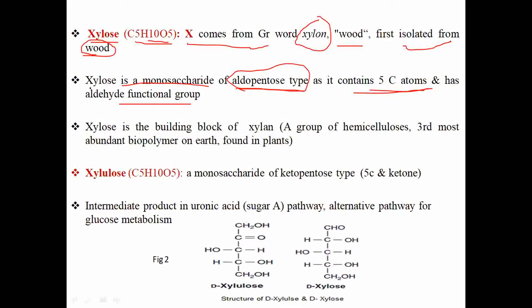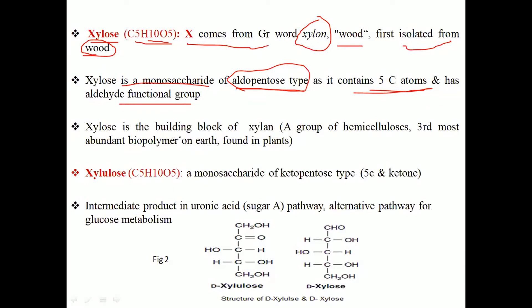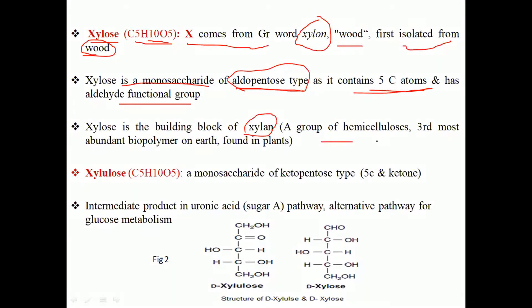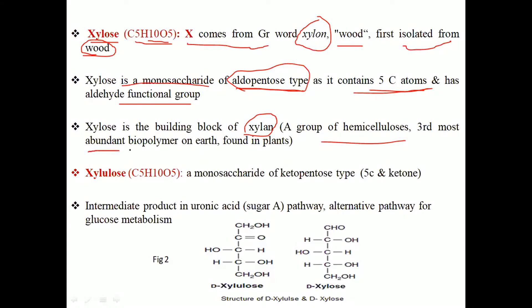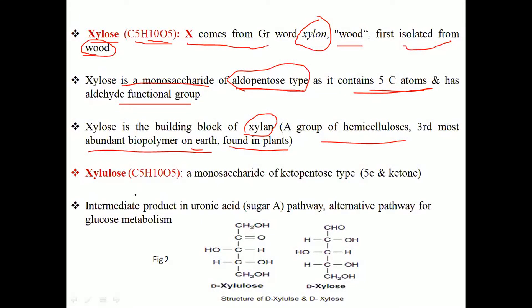Xylose is the building block of xylan. Xylan is a group of hemicelluloses and is the third most abundant biomolecule on Earth, found in plants.